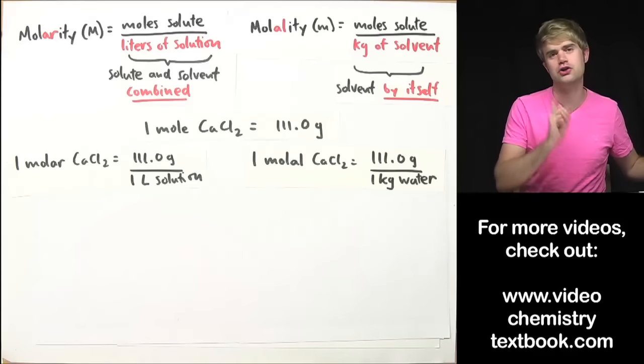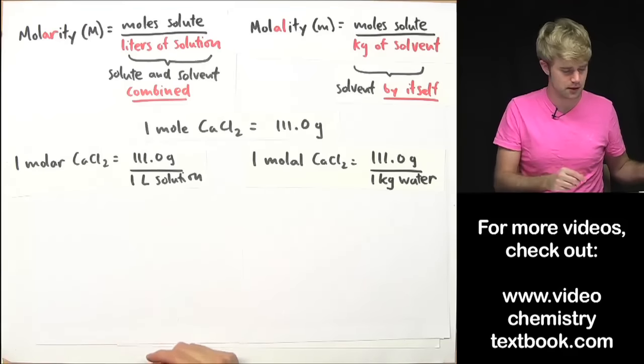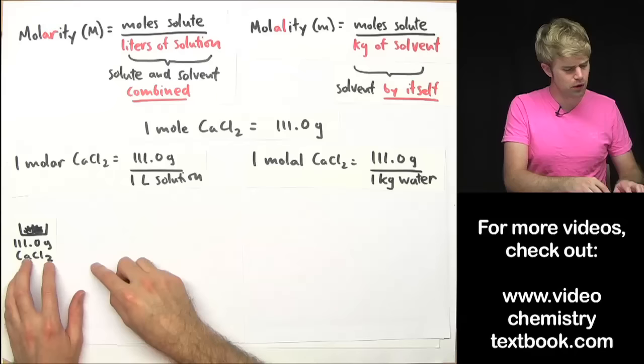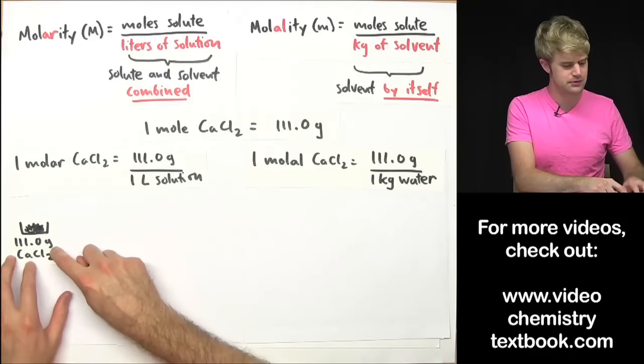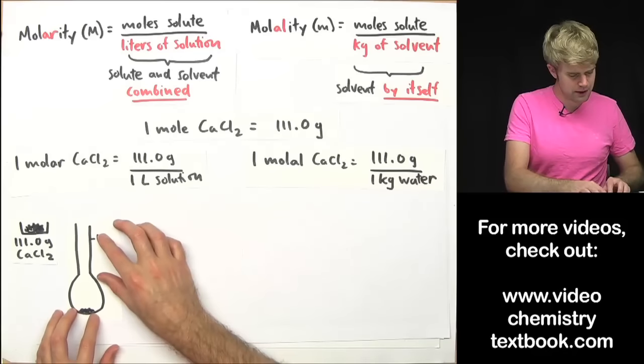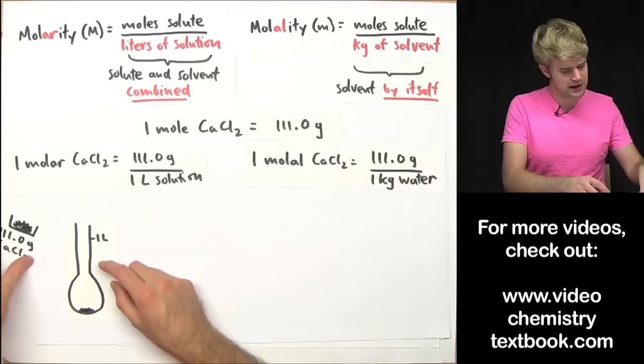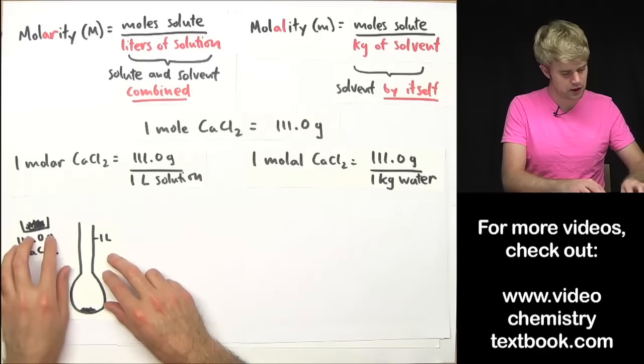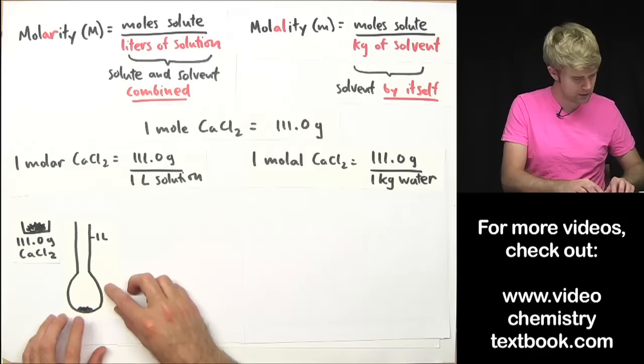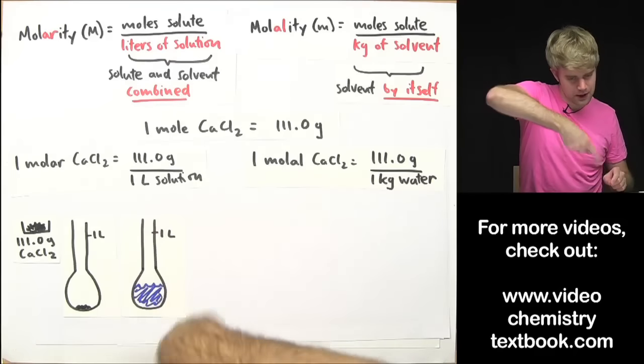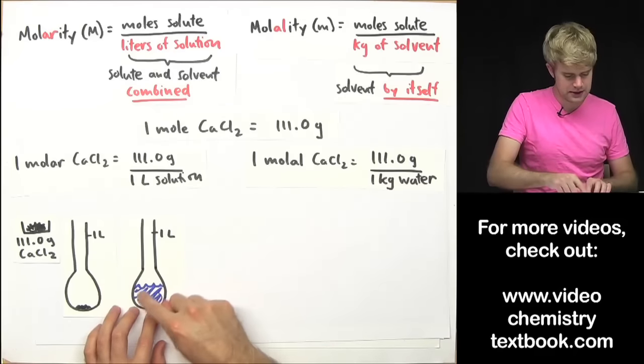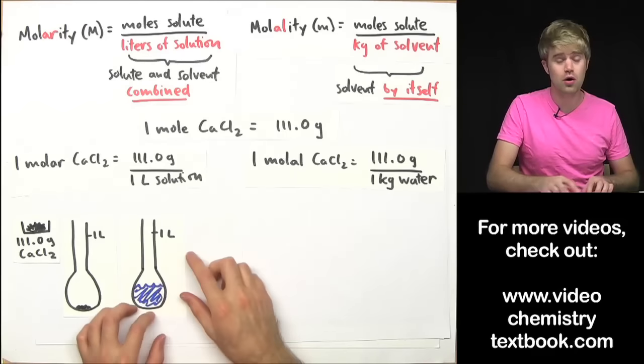But here's how I'll actually do this and this is where the difference comes in. If I want to make a one molar solution, I'll go to the scale and I'll weigh out 111 grams of calcium chloride. I'll then take a volumetric flask like this one and I'll take the calcium chloride and I'll empty it into here so now I have the calcium chloride here on the bottom and what I'll do is I'll add a little bit of water to it and swirl it around until the calcium chloride dissolves in the water.